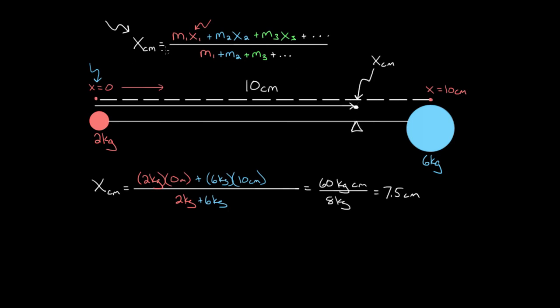And just to show you, you might be like, wait, we can choose any point as X equals zero. Won't we get a different number? You will. So let's say you did this. So instead of picking that as X equals zero, let's say we pick this side as X equals zero. Let's say we say X equals zero is this six kilogram mass's position.